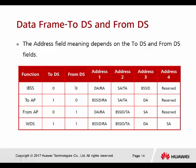When both To DS and From DS bits are zero, this frame doesn't come from or go to an AP. This kind of frame is called IBSS — it belongs to wireless point-to-point or ad hoc data transmission. Address 1 is the destination address, and address 2 is the source address.